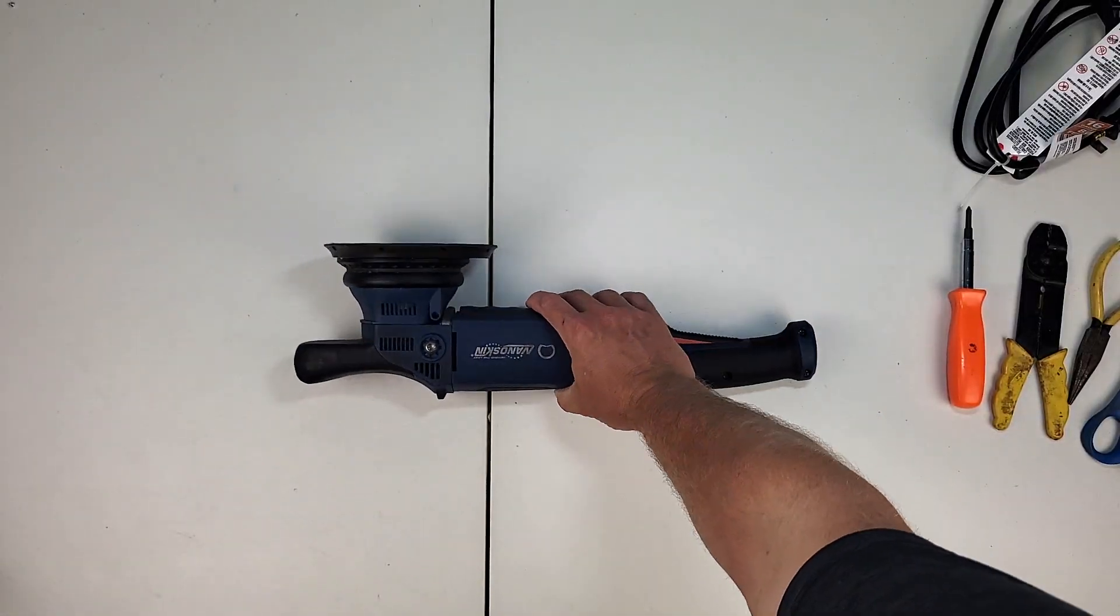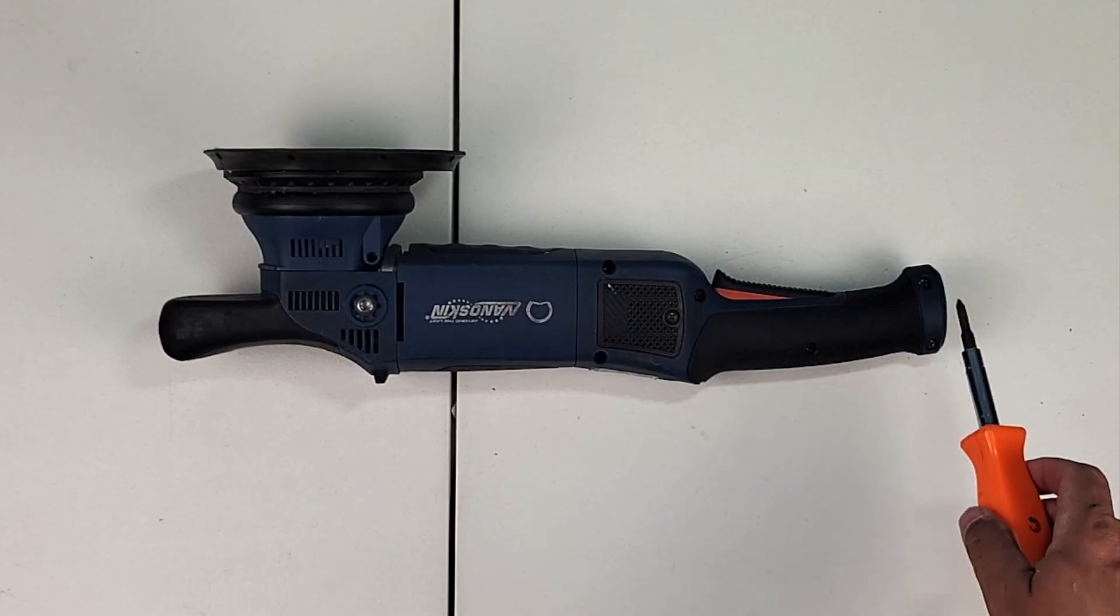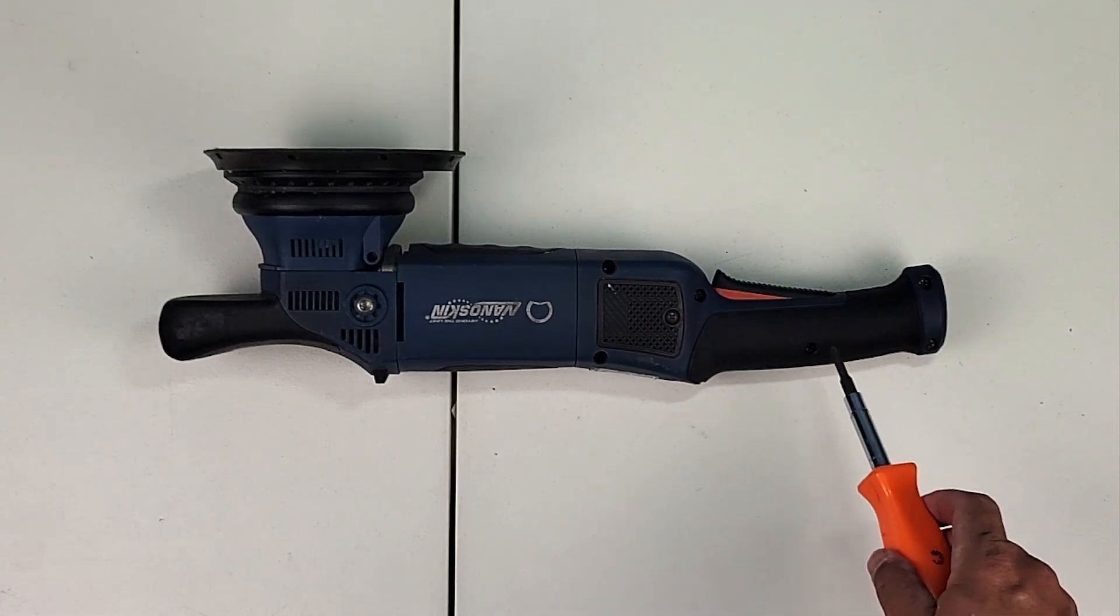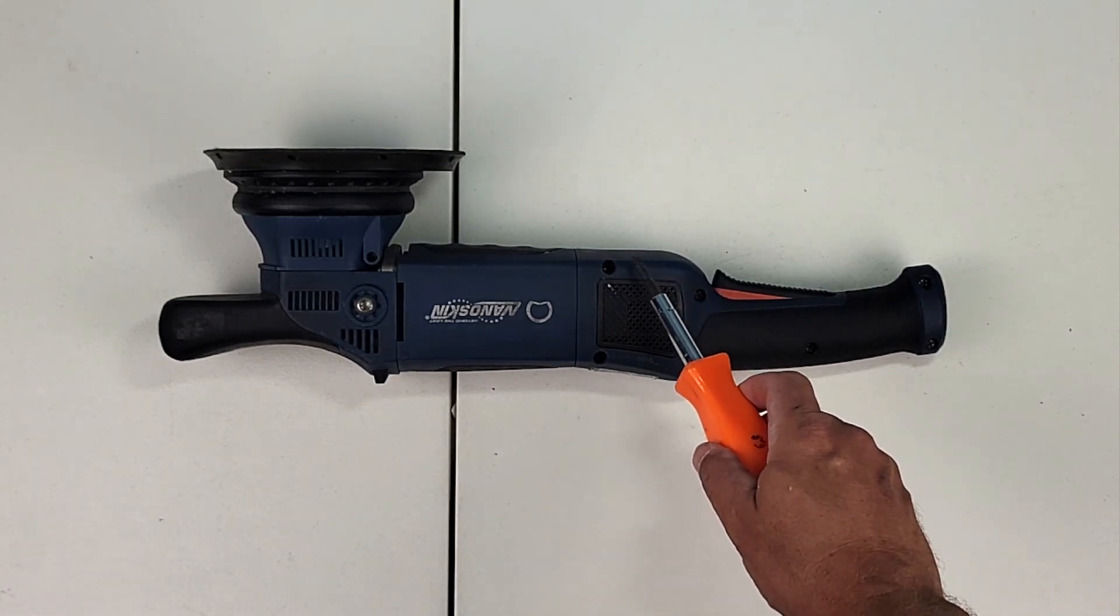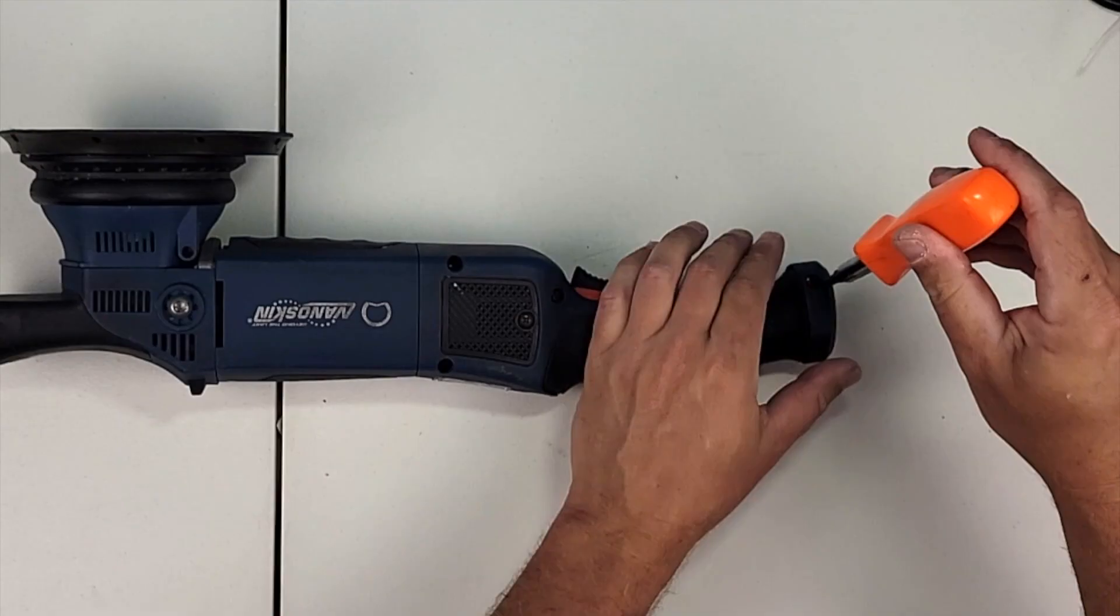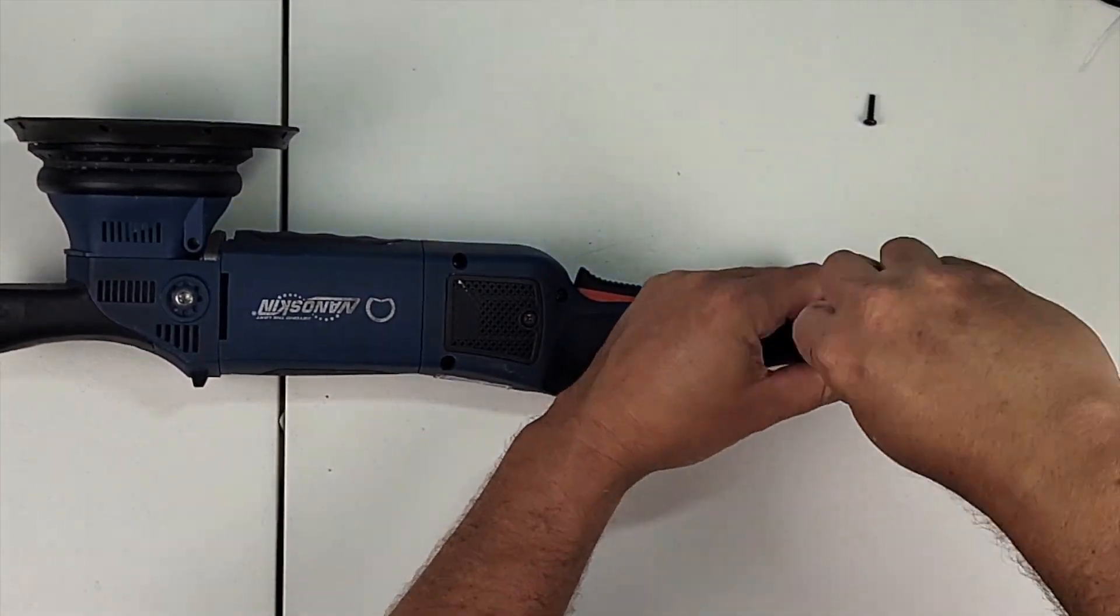Alright we've got our nanoskin micro buff device laid out on the table here. There's six total screws that are holding this plate in, so we'll remove those with the Phillips head screwdriver.